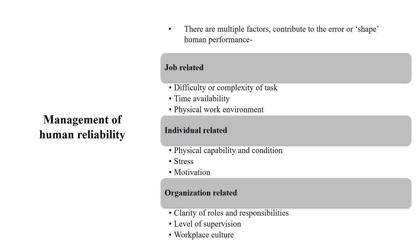When we talk about managing human reliability, there are multiple factors that contribute to error or shape human performance. They may be categorized as job-related, individual-related, and organizational-related. Job-related factors include difficult or complex work, time availability — whether you have a very short time span or enough time to be relaxed — and physical work environment. These are the major elements considered in the job-related area.